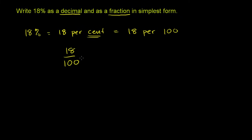So let's do that first. So how do we write, so this is the same thing as 18 hundredths. And we know how to write that in decimal form. It's 0.18.